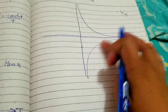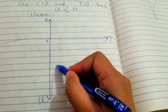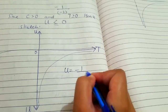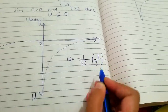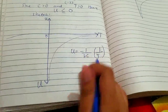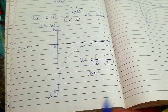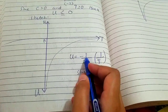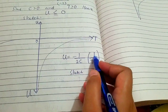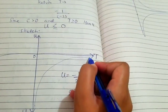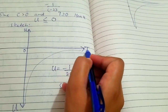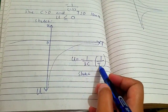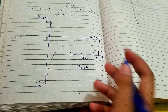The graph of U equals minus 1/(2cT) is shaped like a minus 1/x curve. We can see that as T approaches infinity, U approaches 0 — the curve approaches 0 from below as T gets very large. As T approaches 0, U approaches negative infinity. So the curve starts at large negative values near T equals 0 and asymptotically approaches 0 as T goes to infinity.